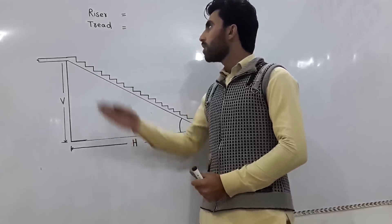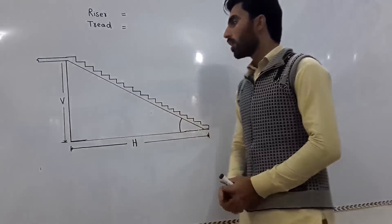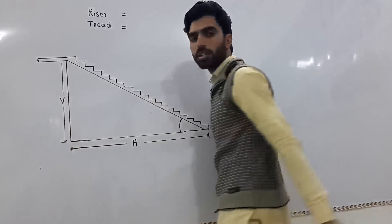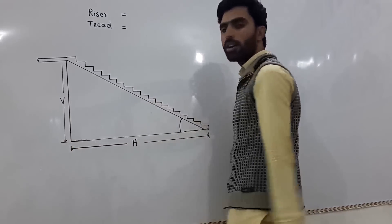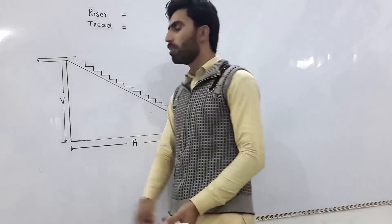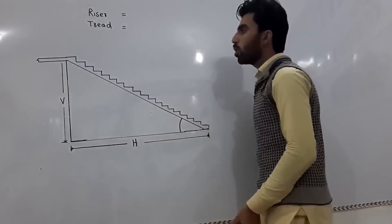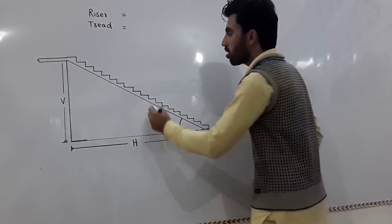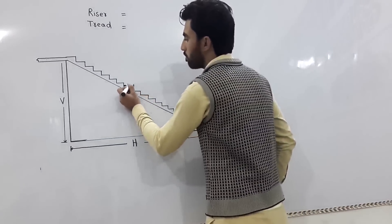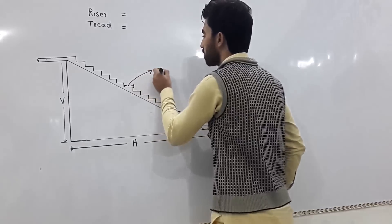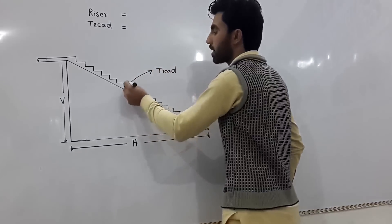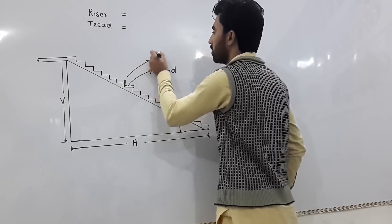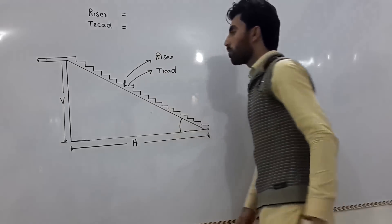For stair design, there are two key components. This section is called the vertical section of the stair, and this one is the horizontal section. The horizontal part is called the tread, and the vertical section is called the riser.